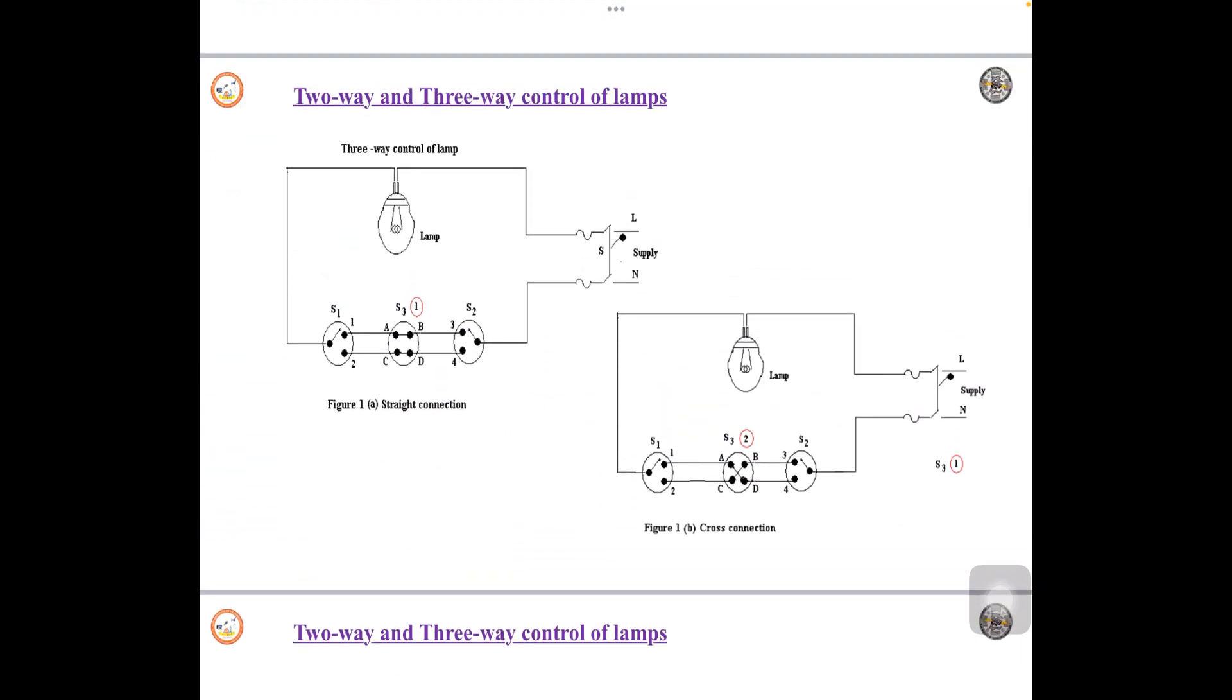Now similar to first connection, here also you have a lamp, line, neutral connection. So figure 1-A shows you straight connection, figure 1-B is showing you cross connection.